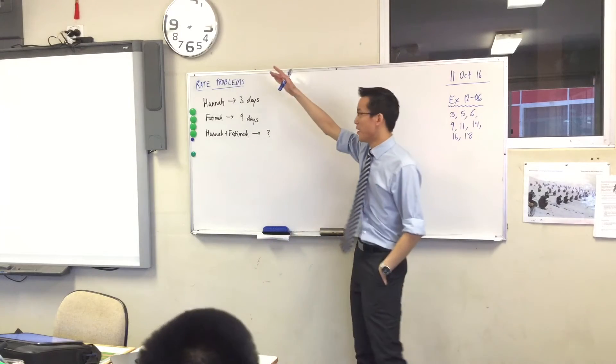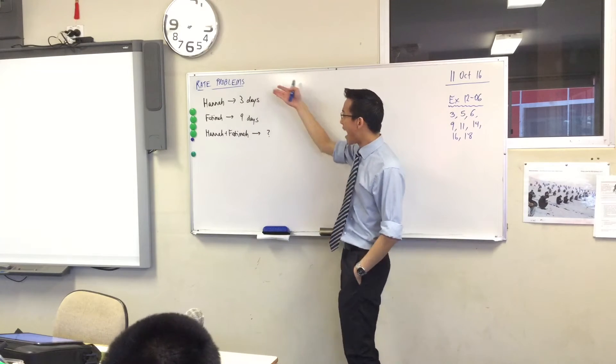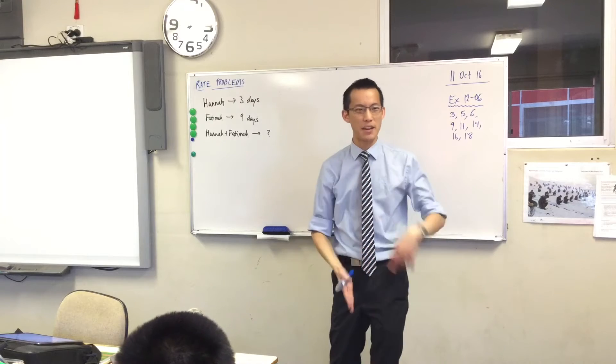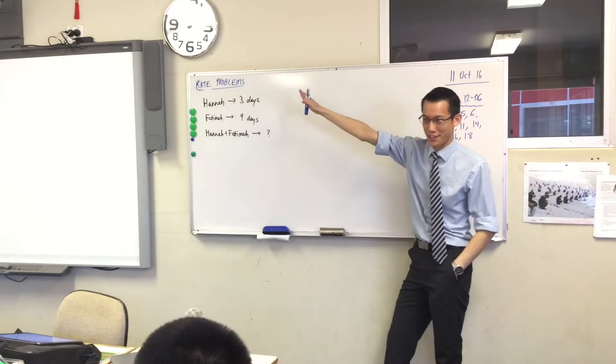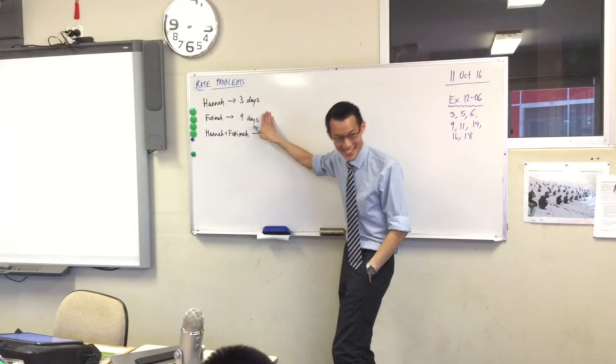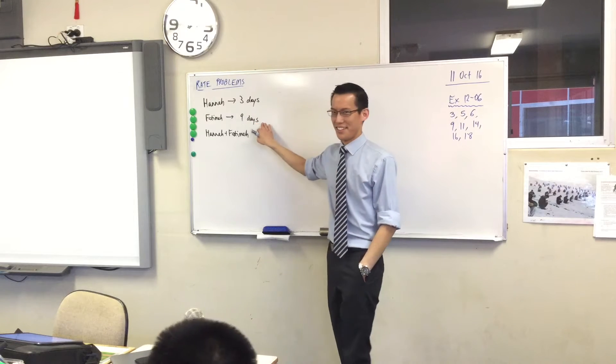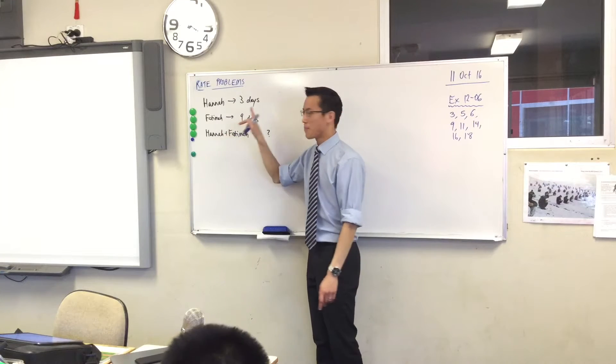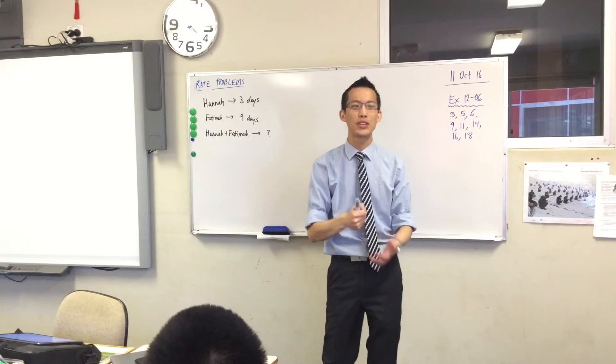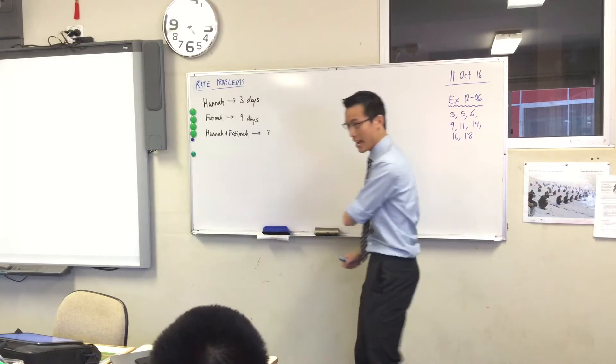The puzzle was, you've got two painters and each of them can paint a house in a particular amount of time. Hannah's tall and efficient, so she paints the house in three days. Fatima, not so much, so nine days. The question was, what if they both painted together, how long would it take?